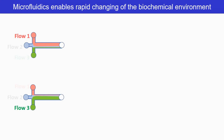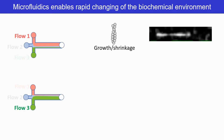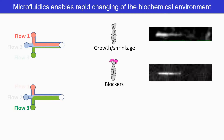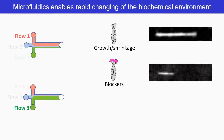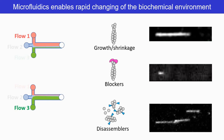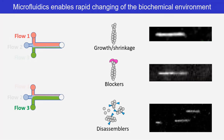Microfluidics also enables rapid change of biochemical environment by changing the input flow. As an example, microfluidics has been used here to observe the growth and shrinkage of actin filaments, blocking of growth by a capper, and disassembly of actin filaments by a disassembling protein.